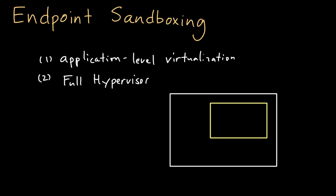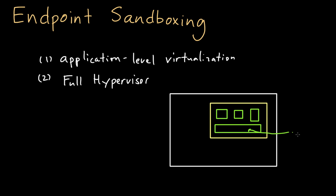For example, that might include things like your web browser, an office productivity application, a PDF reader, and so on — all running inside a virtual environment on top of a guest operating system. To make this work, this would be a stripped-down guest operating system. If it's stripped down enough, you can effectively gain some performance back. And you'd have legitimate applications that might introduce malware onto the system running inside of this overall environment.